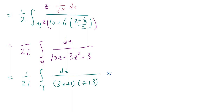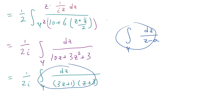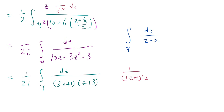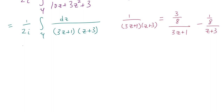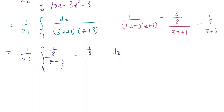This almost has the form we want for the winding number: an integral of dz over z minus some complex number a. We use partial fractions: 1 over (3z plus 1)(z plus 3) equals (3/8) over (3z plus 1) minus (1/8) over (z plus 3). Dividing top and bottom of the first term by 3 to put it in the form z plus 1/3, then rewriting, we get 1 over 2i times the integral along gamma of (1/8)/(z plus 1/3) minus (1/8)/(z plus 3) dz.